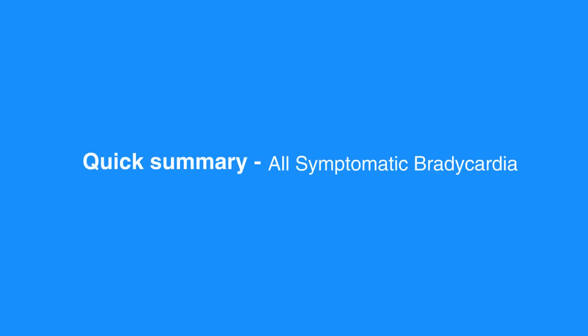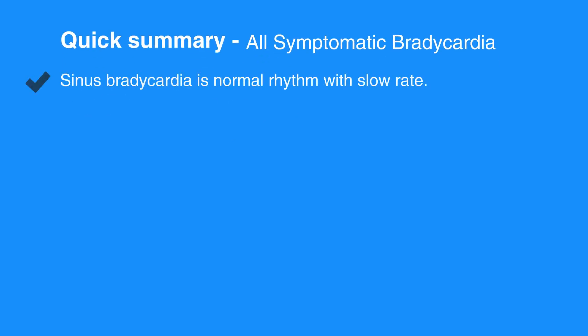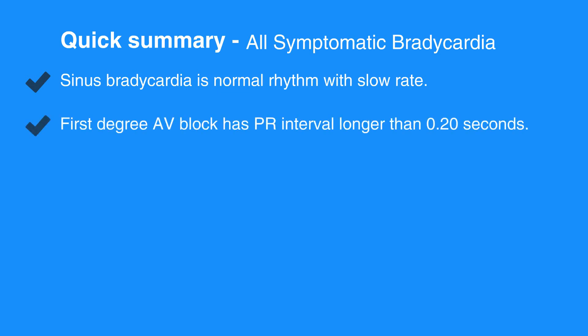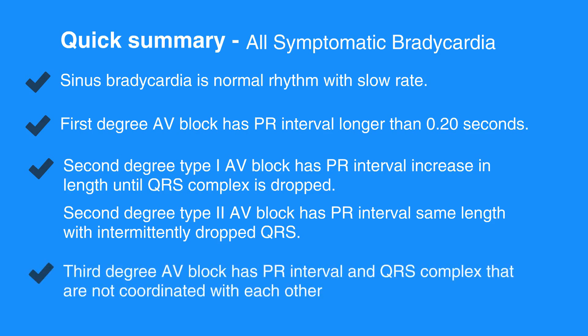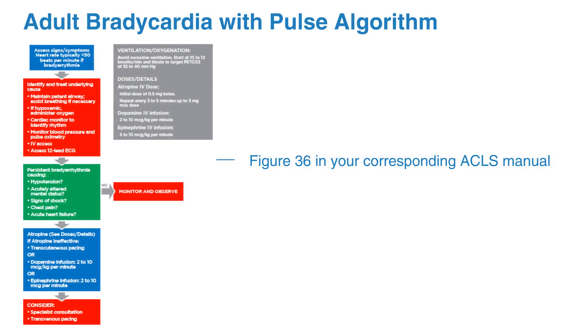Here is a quick summary of all the symptomatic bradycardias. Sinus bradycardia is normal rhythm with slow rate. First degree AV block has PR interval longer than 0.2 seconds. Second degree type 1 AV block has PR interval increasing in length until QRS complex is dropped. Second degree type 2 AV block has PR interval same length with intermittently dropped QRS. Third degree AV block has PR interval and QRS complex that are not coordinated with each other. For the adult bradycardia with pulse algorithm, refer to figure 36 in your corresponding ACLS manual.